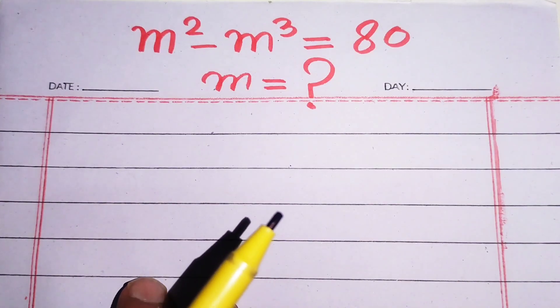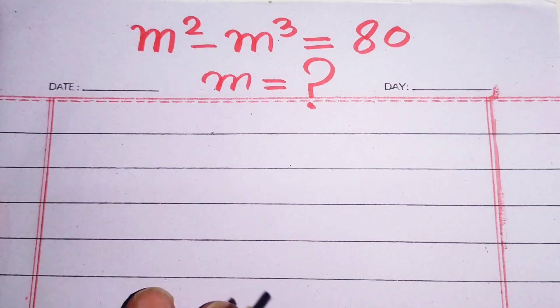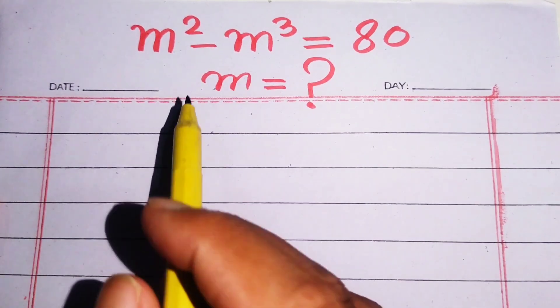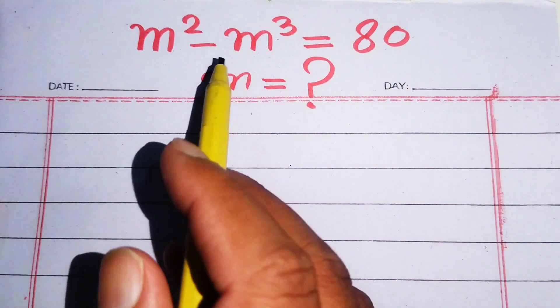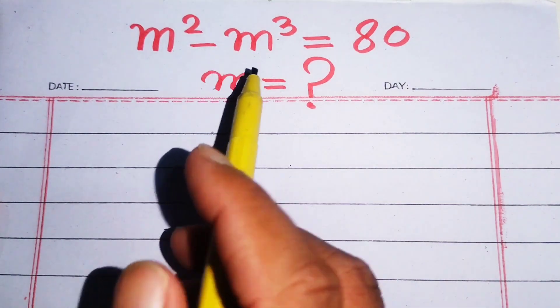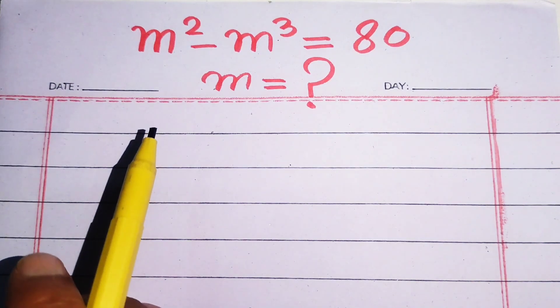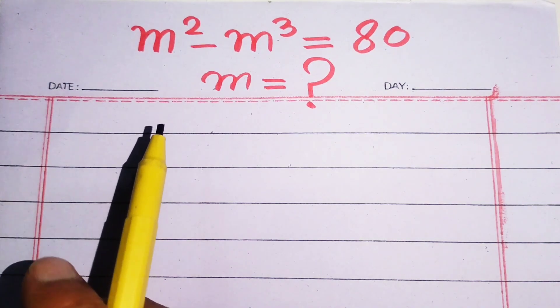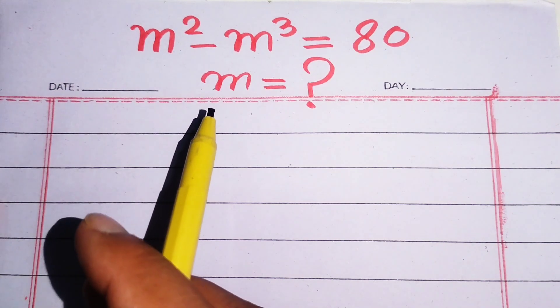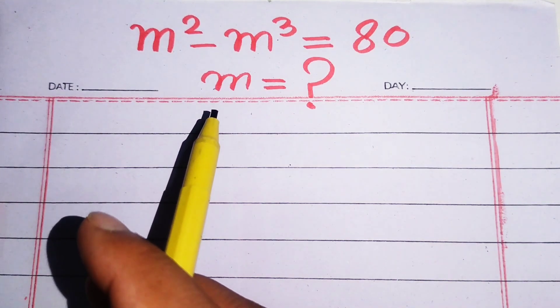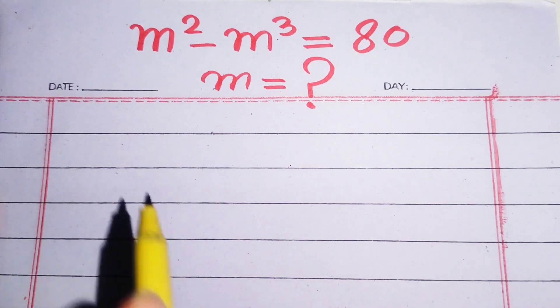Hello everyone, welcome. We are going to solve this nice algebra problem. Here we have m squared minus m cubed equals 80, and we will solve this problem for the values of m.